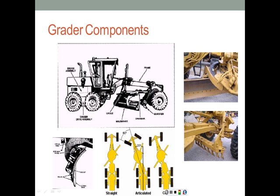Here's the mechanism that operates the blade inclination and blade rotation. The grader can move either straight with the blade perpendicular to the direction of operation, or tilted at a certain angle which affects the width of shaping the soil. It can also move in an articulated way, or in what's called a crab motion with the front wheels parallel to the rear wheels but at a different axis.